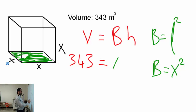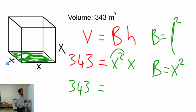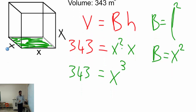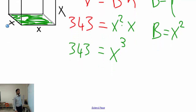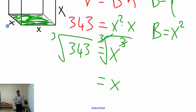Now replace B in the formula: we have x squared times the height, which is also x. So we get x squared times x, which equals x cubed. To find x from the equation 343 equals x cubed, I need to take the cube root of both sides — not the square root — which cancels out the cube.